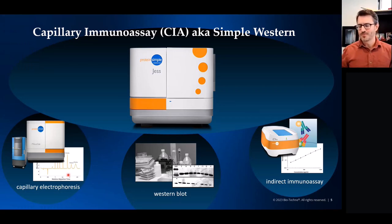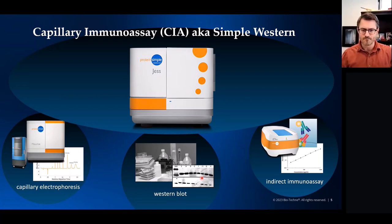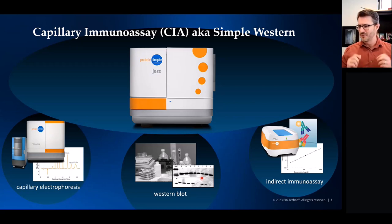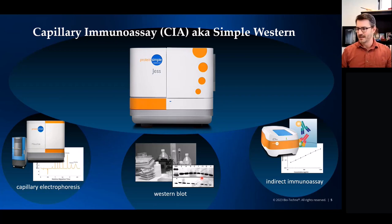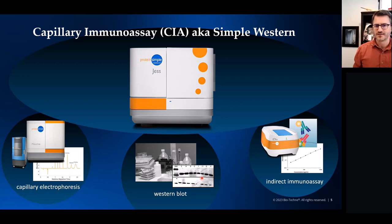It's more appropriate to call Simple Western a replacement for western blot than to call it a western blot. Western blotting involves transferring protein from a gel to a membrane — we literally do not do that step in Simple Western, because it's one of the biggest sources of variation. By definition, we are not an automated western blot; it's more appropriate to refer to us as an indirect immunoassay inside a capillary. The name bubbling to the top right now is capillary immunoassay, or CIA, though capillary nano-immunoassay, or CNIA, also appears in publications.